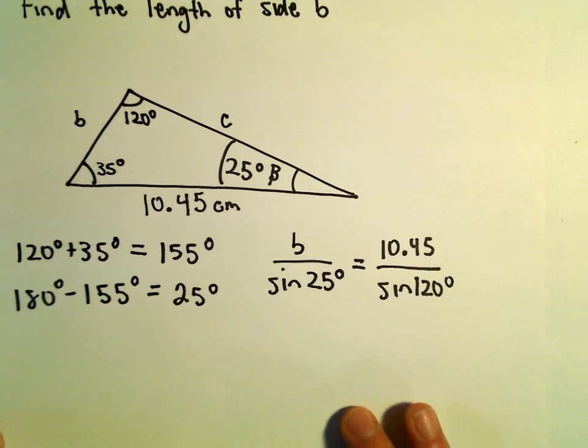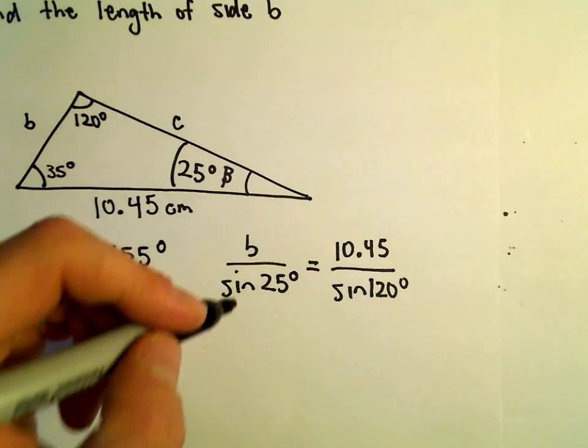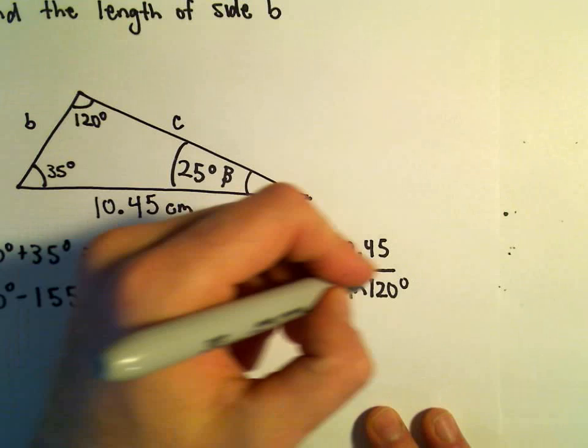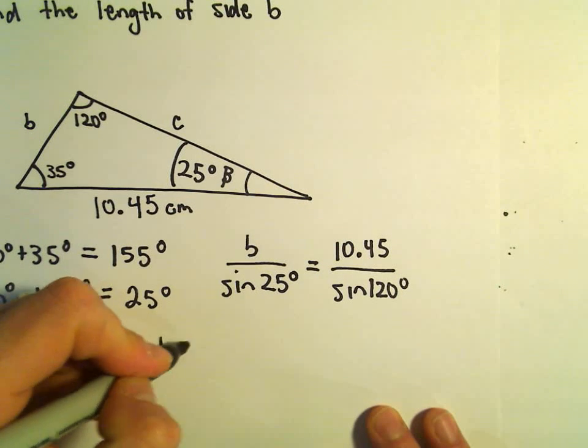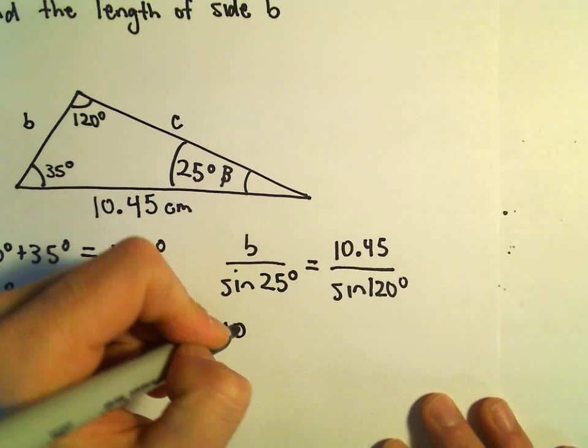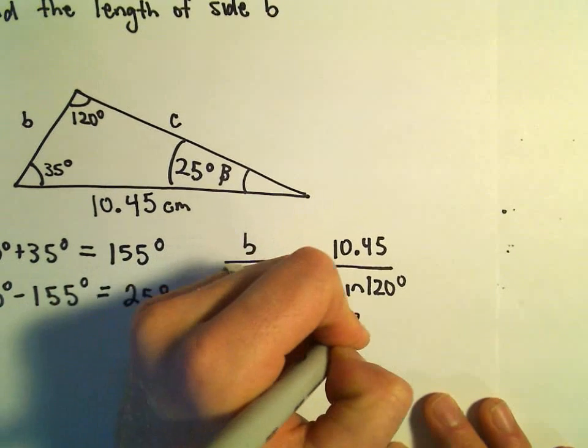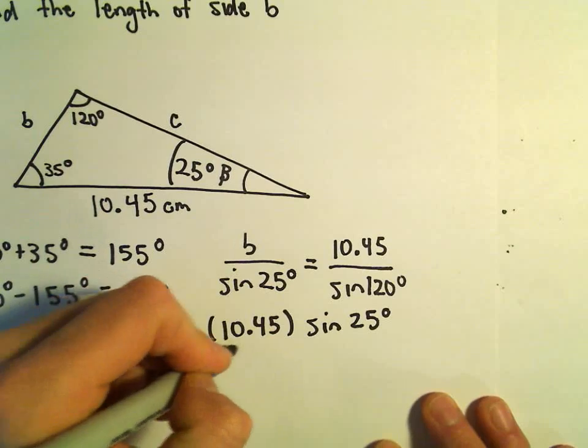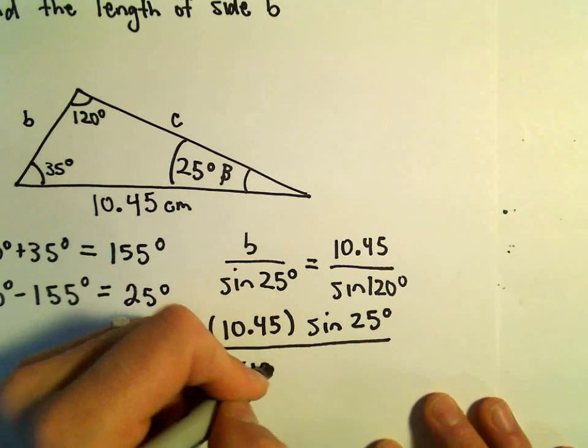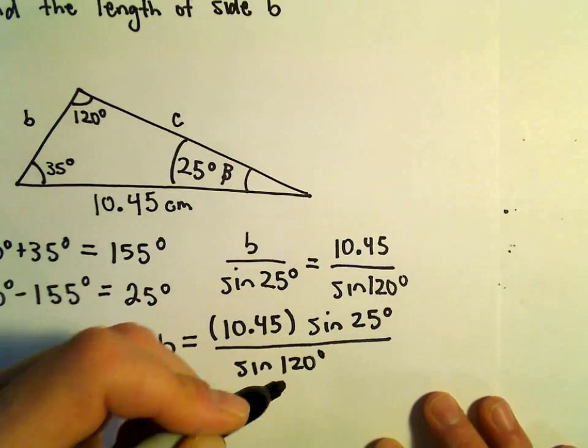And now all we have to do is simply solve for b. We can multiply both sides by sine of 25 degrees, so that will leave us with b equals 10.45 times sine of 25 degrees, all over sine of 120 degrees.